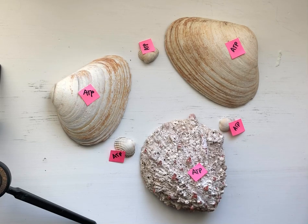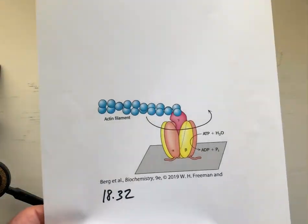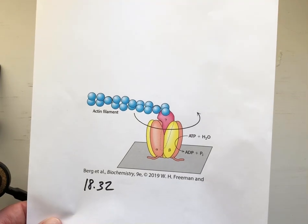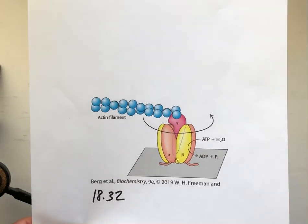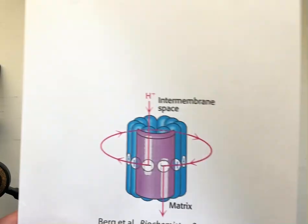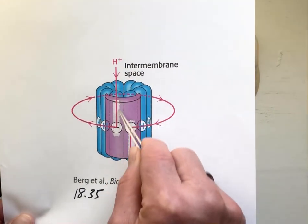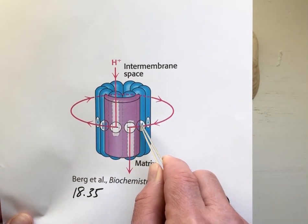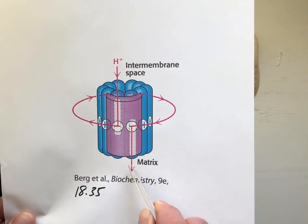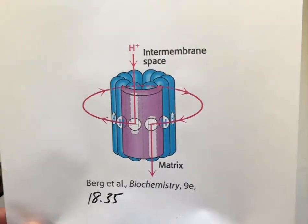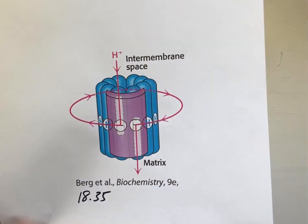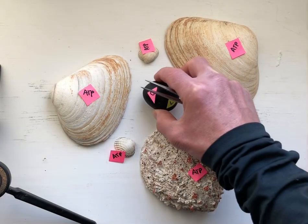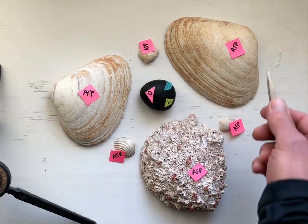We need the gamma subunit and we need its rotation to cycle between the L, T, and O states. Recall that the gamma subunit is rotated as a consequence of protons going through the A subunit, attaching themselves to the glutamate on the C ring, and then coming out on the other side via the other half-channel on the A subunit. With the proton motive force driving rotation of the gamma subunit, we can now study what happens to these beta subunits.